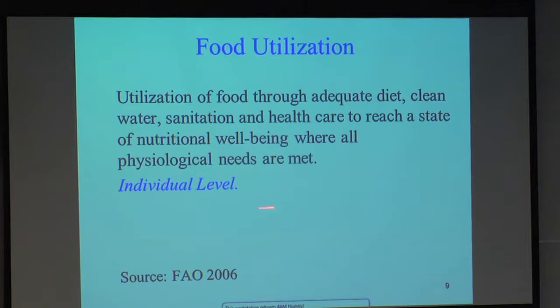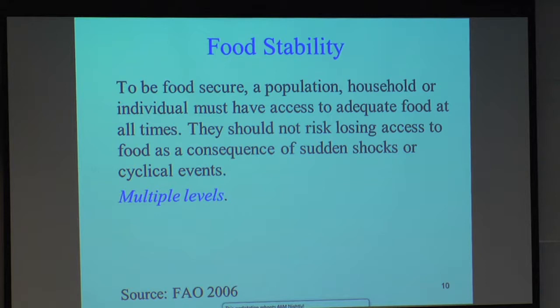Food stability is where people are not at risk of losing food security as a result of sudden shocks or cyclical events. A shock — the Haiti earthquake is an example — where you suddenly lose your food supply. Cyclical events would be things like the lean season before a harvest, where a family knows every year there will be less food in their stocks. If cyclically, every year, they're at risk of losing adequate food, that would be an example of poor food stability.